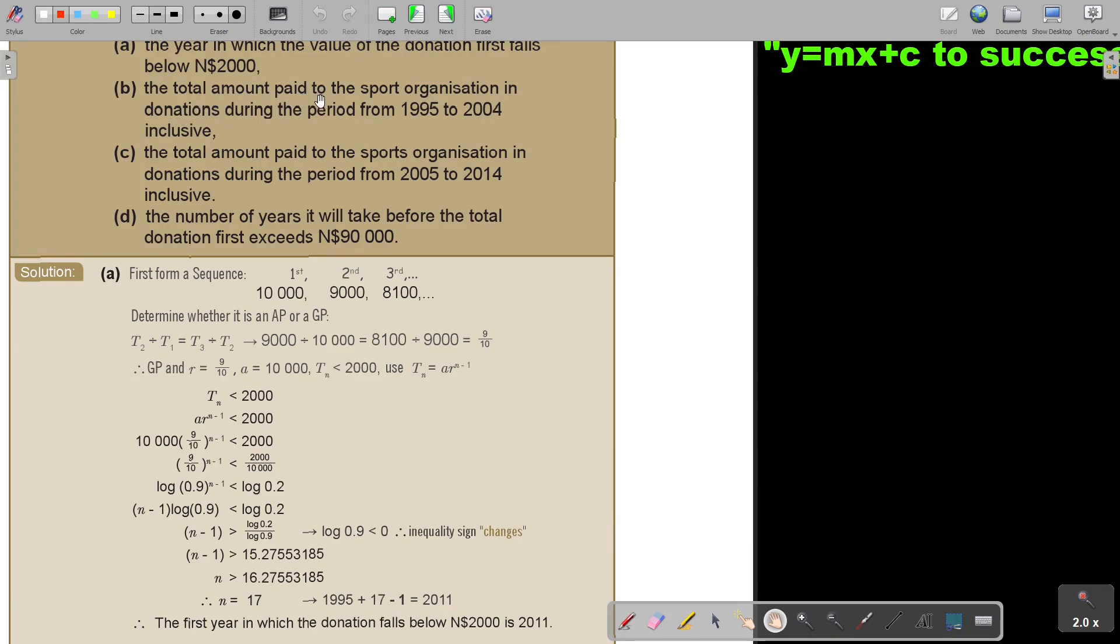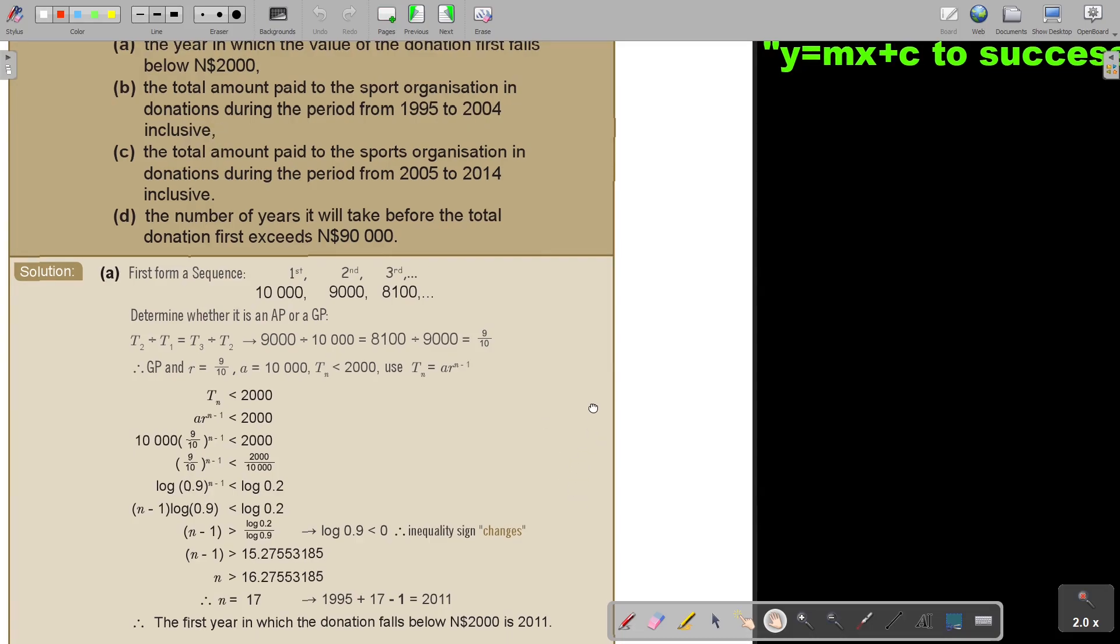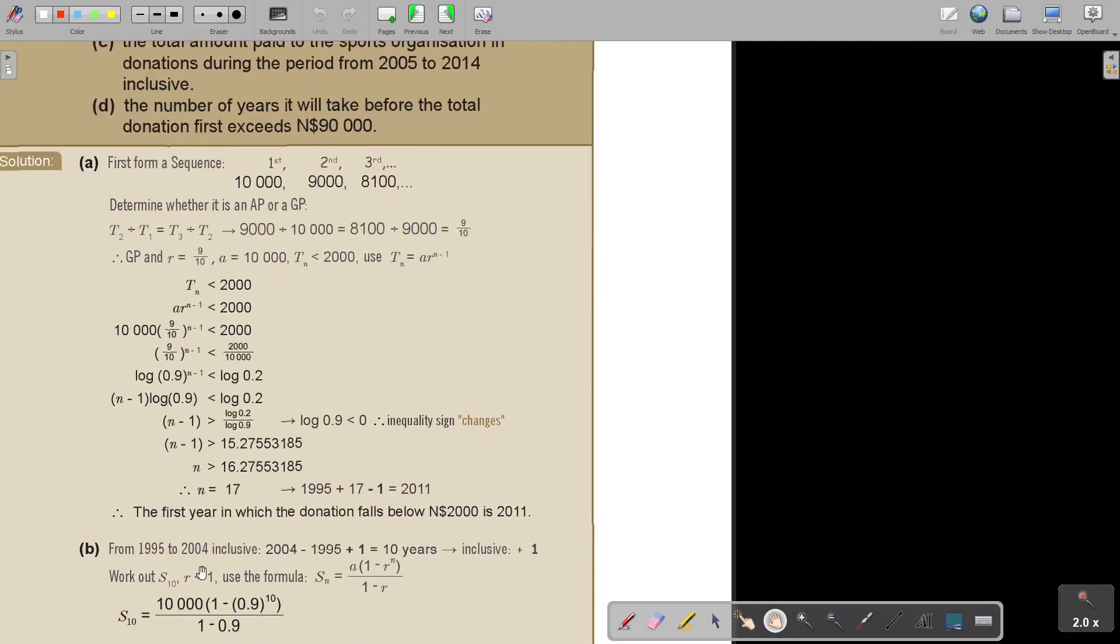So the total amount paid to the sport organization in donations during the period from 1995 to 2004, inclusive. It's that inclusive again. From to inclusive, it's again, there's the plus 1 again. So it's 10 years. The inclusive is the plus 1.